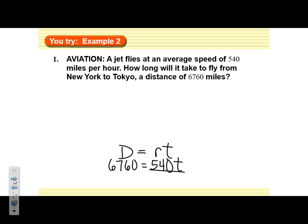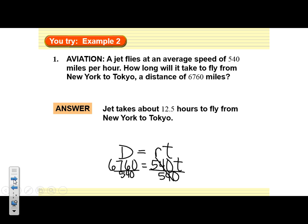And then once again, to solve for t, I'm going to divide. And if I calculate 6,760 divided by 540, we find out that the answer is about 12.5 hours.